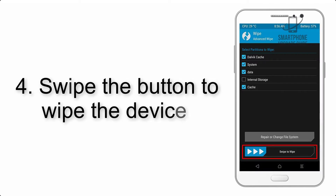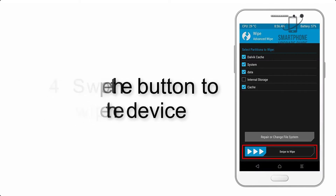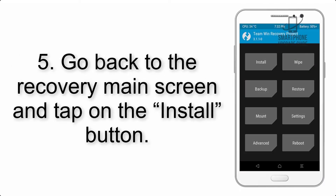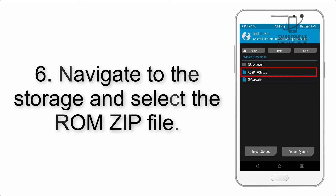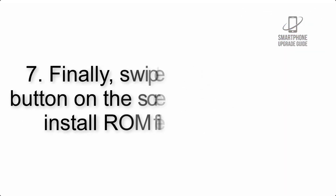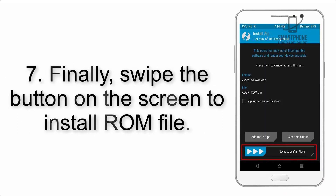Step 4: Swipe the button to wipe the device. Step 5: Go back to the recovery main screen and tap on the Install button. Step 6: Navigate to the storage and select the ROM zip file.